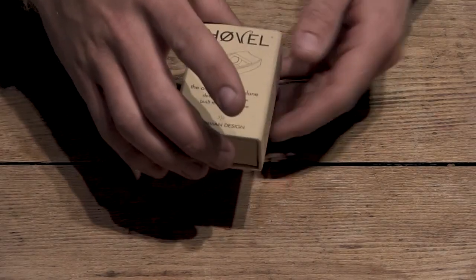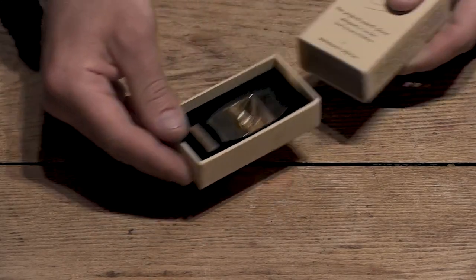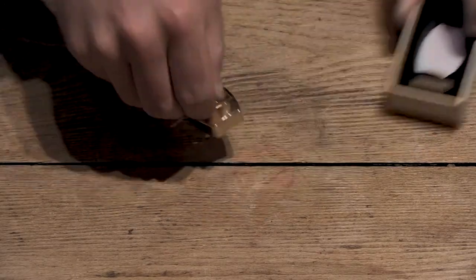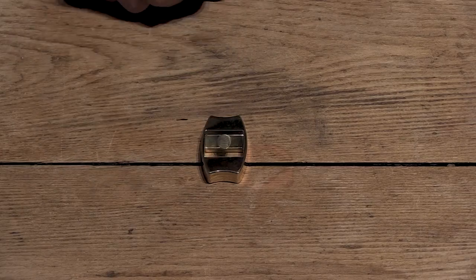Start by opening the box and removing the hovel, then remove one blade from the pack inside of the box. Place the hovel on a flat surface and undo the thumb screw.